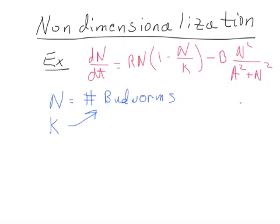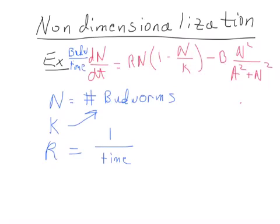This term is in number of budworms, and the units on the derivative dn/dt are budworms per time. So r must have units of one over time — that might be one over years, one over days, or whatever the time units are. So we have n, k, and r sorted. We also need to get b and a, which is a little trickier.